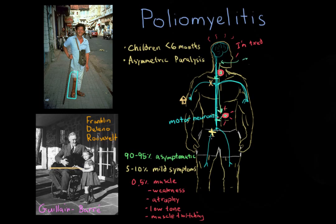Beyond the arms and legs, if the muscles used in respiration are paralyzed, patients can no longer breathe on their own. This can be very debilitating and fatal if the respiratory muscles are affected.